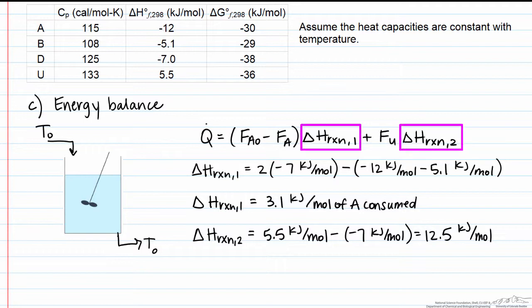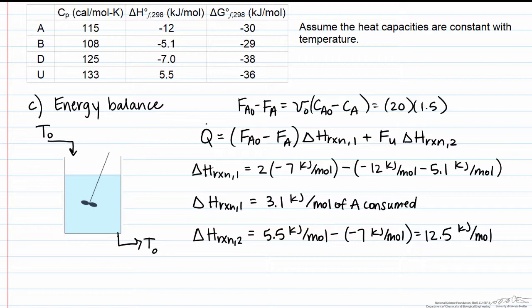Now we have these 2 variables for the heats of reaction, to get FA0 minus FA, that's the same as the volumetric flow rate, total volumetric flow rate which is 20 liters per minute, times CA0 minus CA, which has been also given previously in the problem. This difference is equal to 1.5 moles per liter.